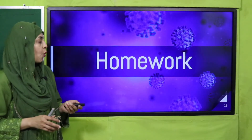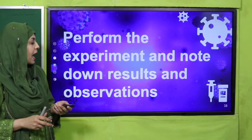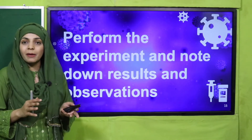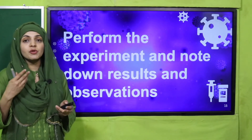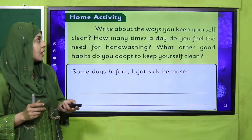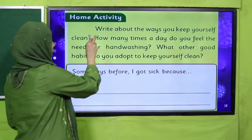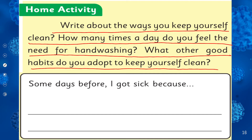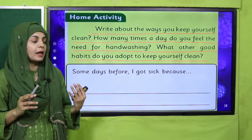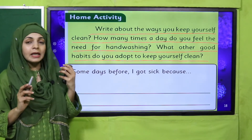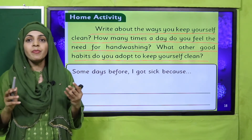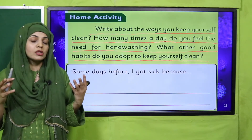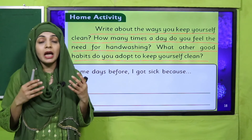For homework, perform the experiment and note down results and observations. For the home activity, write about the ways you keep yourself clean: how many times a day do you feel the need for hand washing, what other good habits do you adopt to keep yourself clean, and write about a time you got sick. Complete this in your notebook.